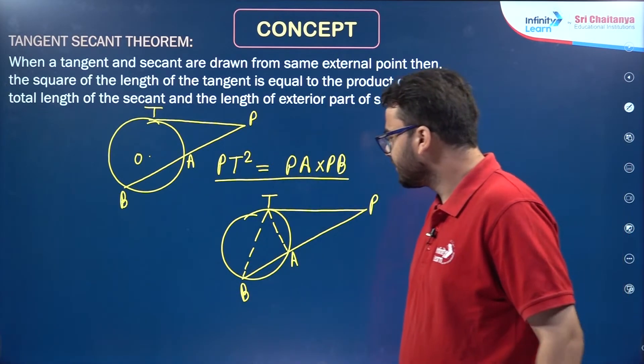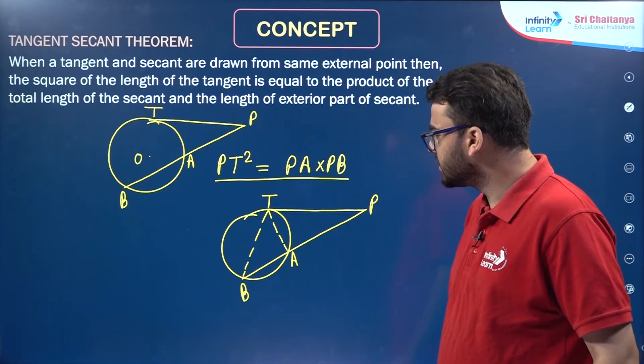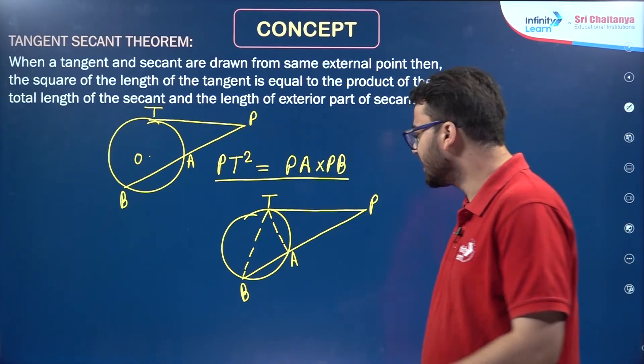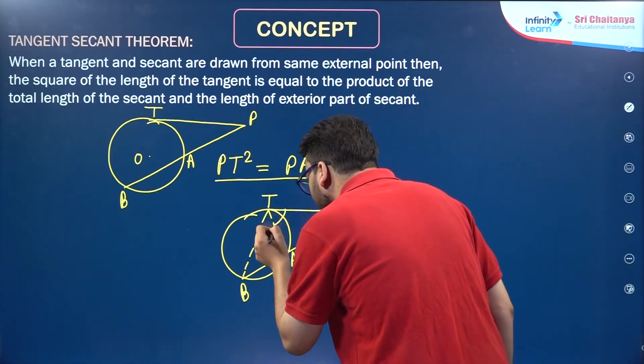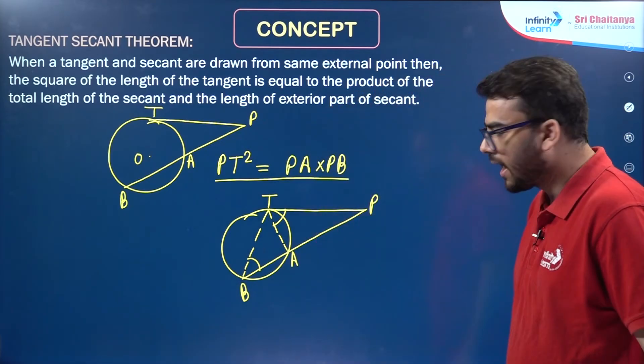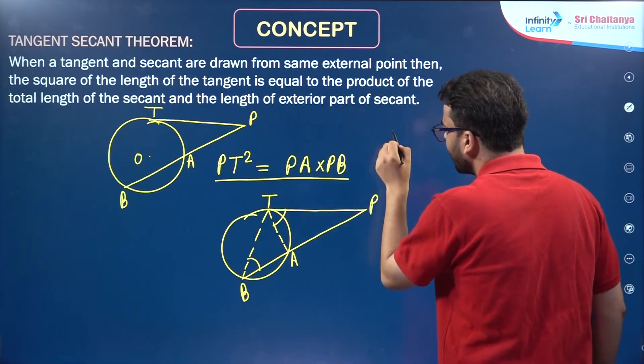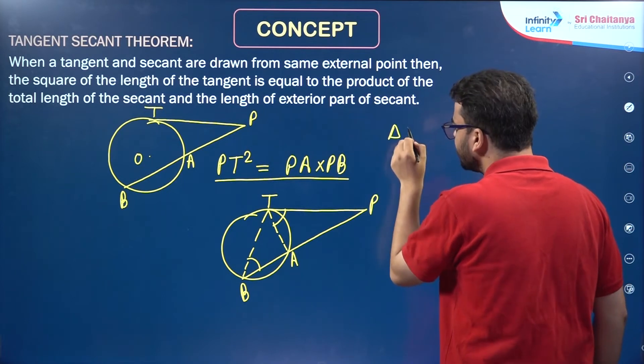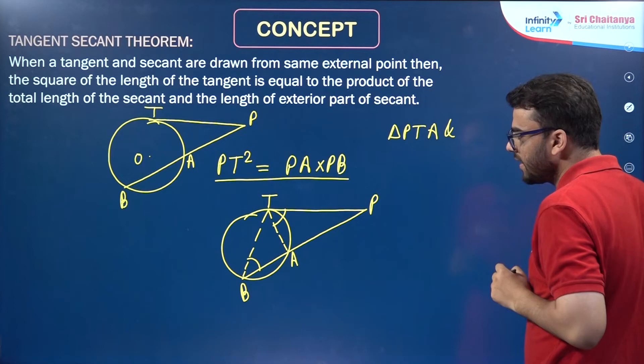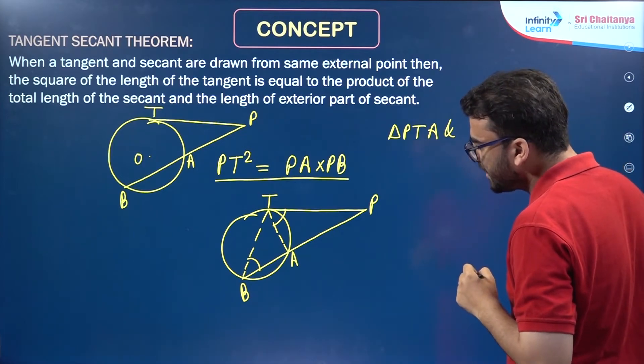Now, we have studied the alternate segment theorem. Using this, we can say that this angle equals this angle. If I look at triangle PTA and triangle PBT...